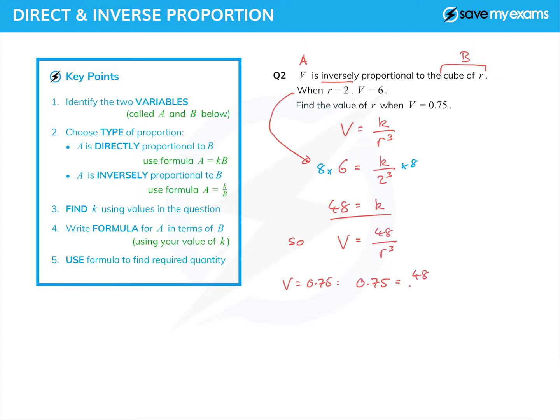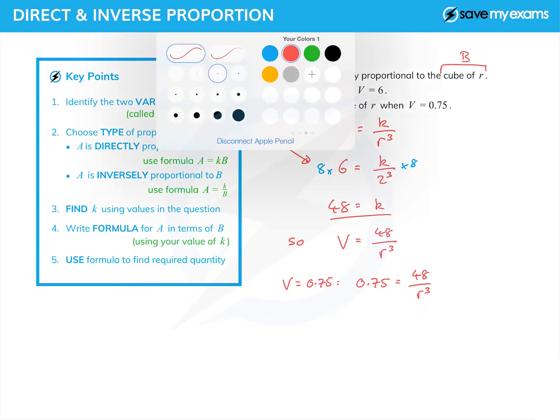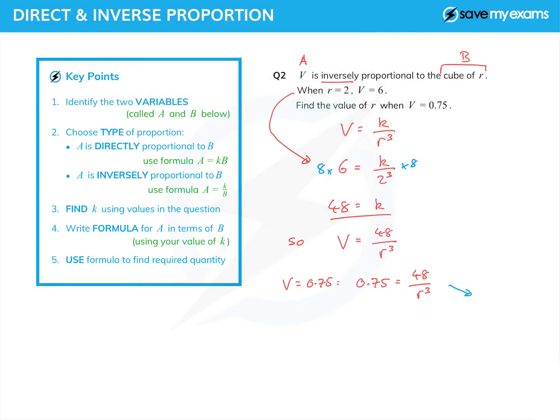However I want to rearrange that, I'm going to use a little blue triangle. I'm going to put in 0.75 equals 48 over r cubed. So what does r cubed equal? It equals 48 over 0.75.